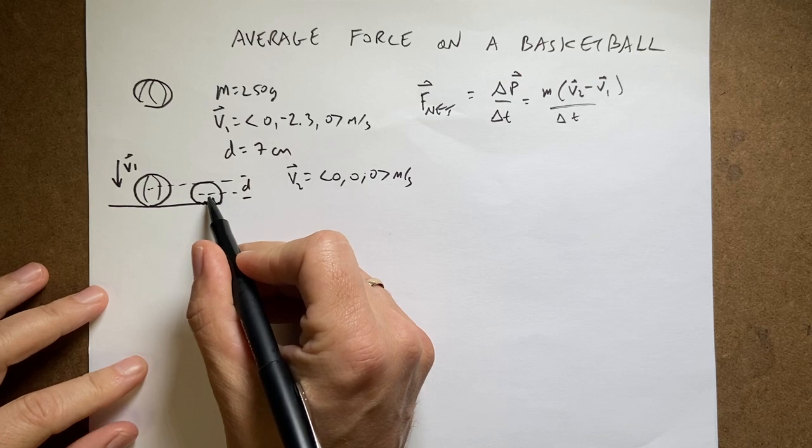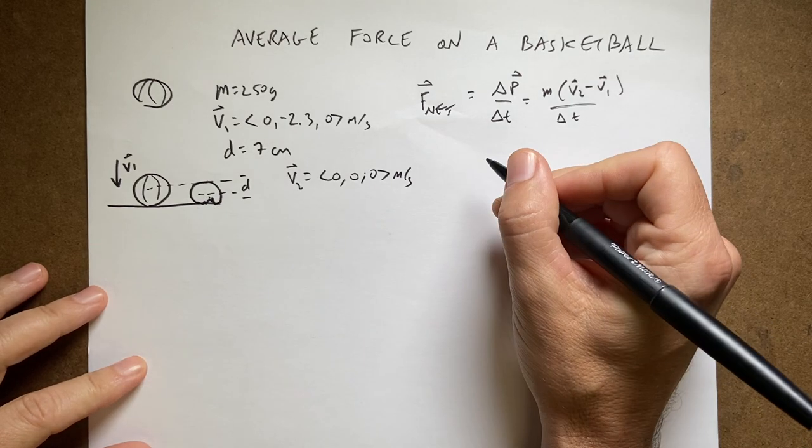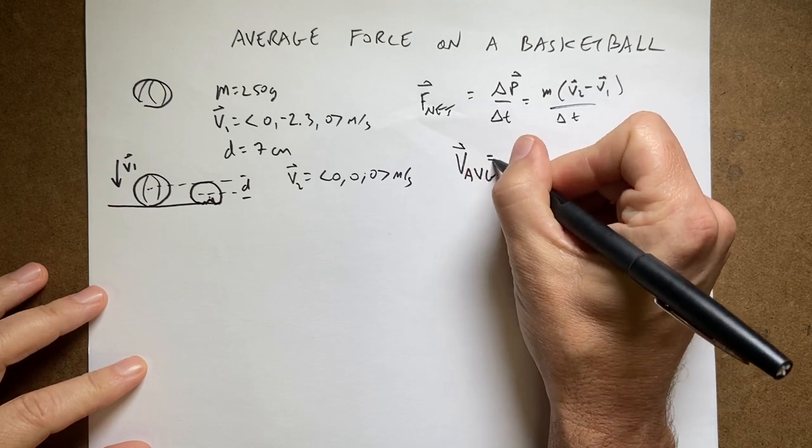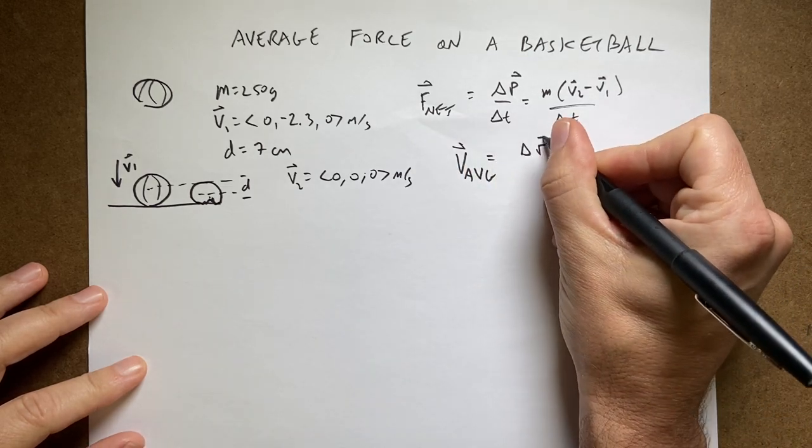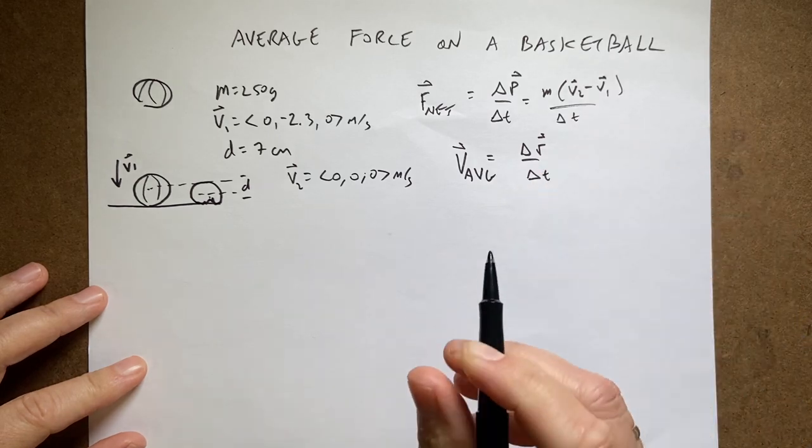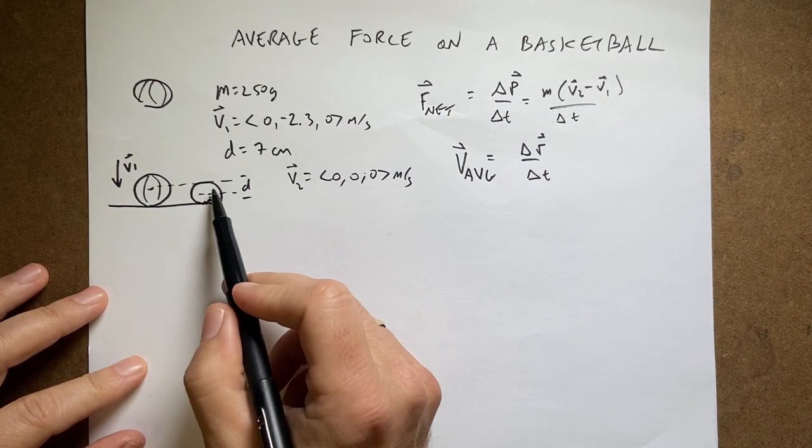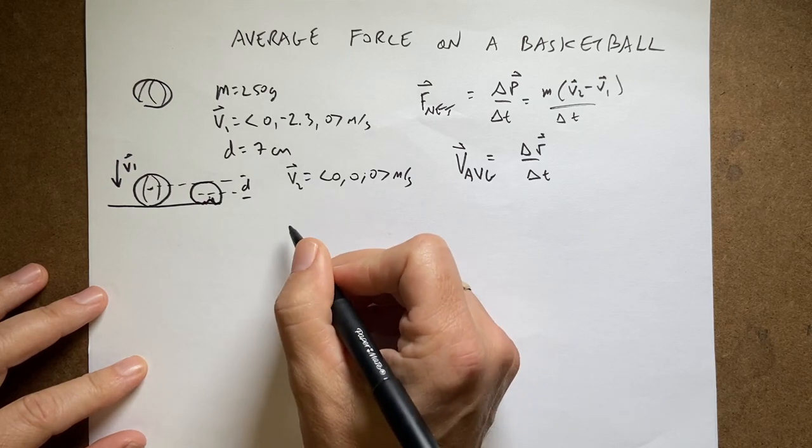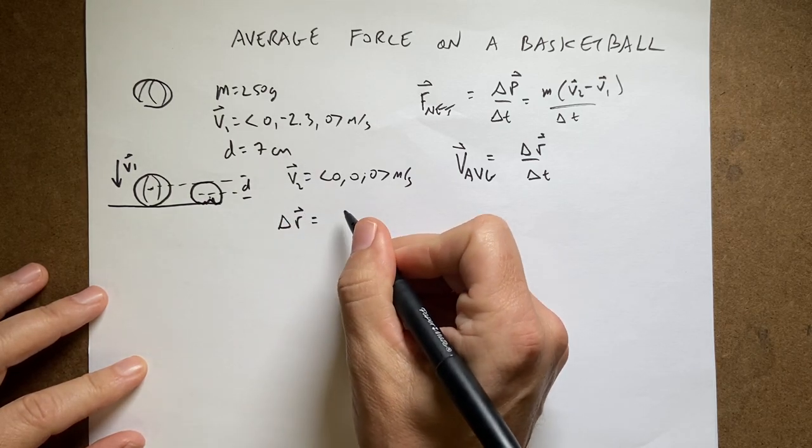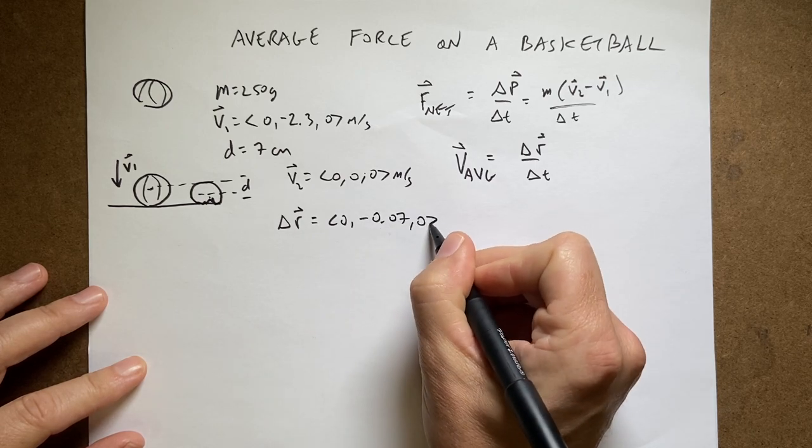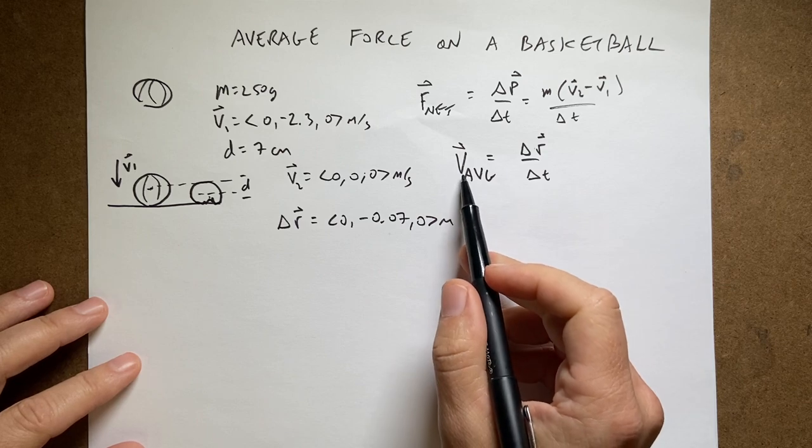So let's look at it this way. Let's say that the ball is traveling right here with the velocity v1 and right here with the velocity v0. I can say this, the average equals delta r over delta t. And in fact I know delta r right, delta r is from the center here, goes seven centimeters.